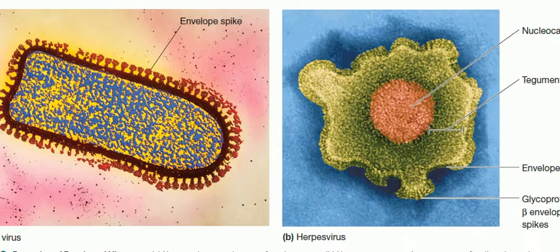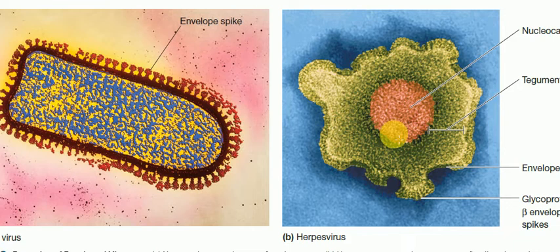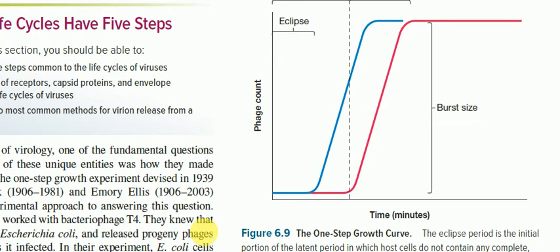Here is the rhabdo virus, which is the rabies virus. This is a herpes virus. You can see enveloped spikes outside, and inside the lumen the nucleic acid is floating. The envelope is outside with glycoprotein spikes, a tegument area, and nucleic acid floating inside — shown in red. Both are types of rhabdo viruses.